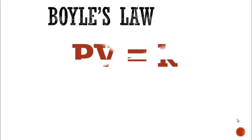We are going to start with Boyle's Law. Boyle's Law looks at the relationship between pressure and volume — P for pressure, V for volume. What we find is that when we multiply pressure by volume, we get a constant K.